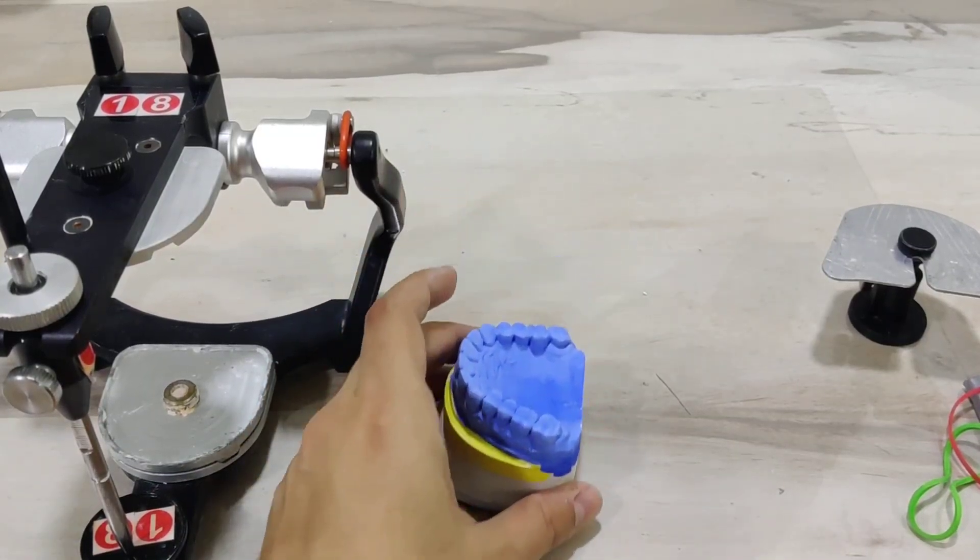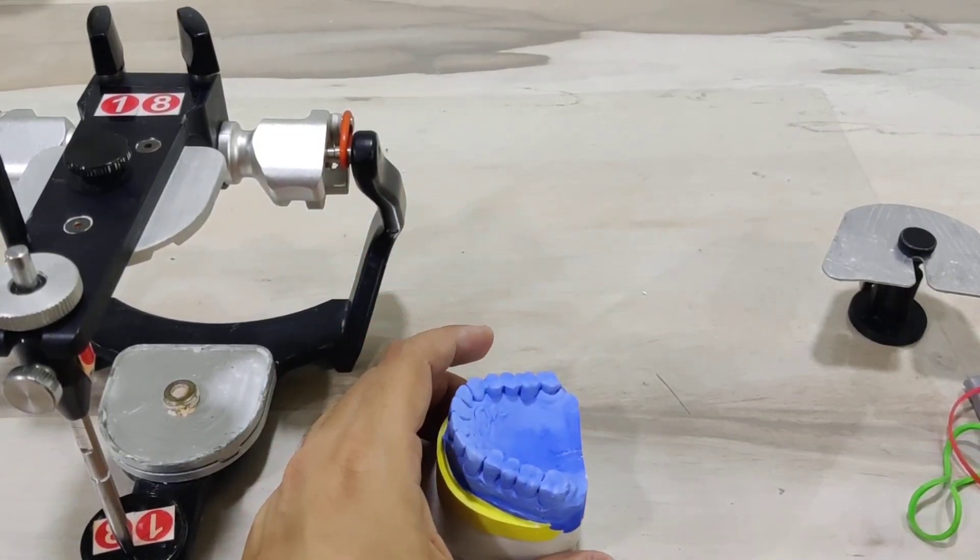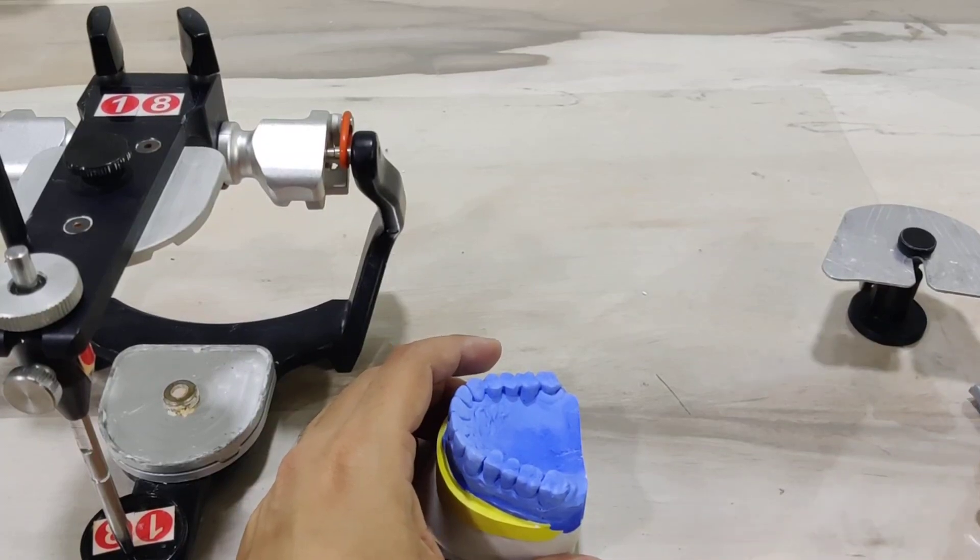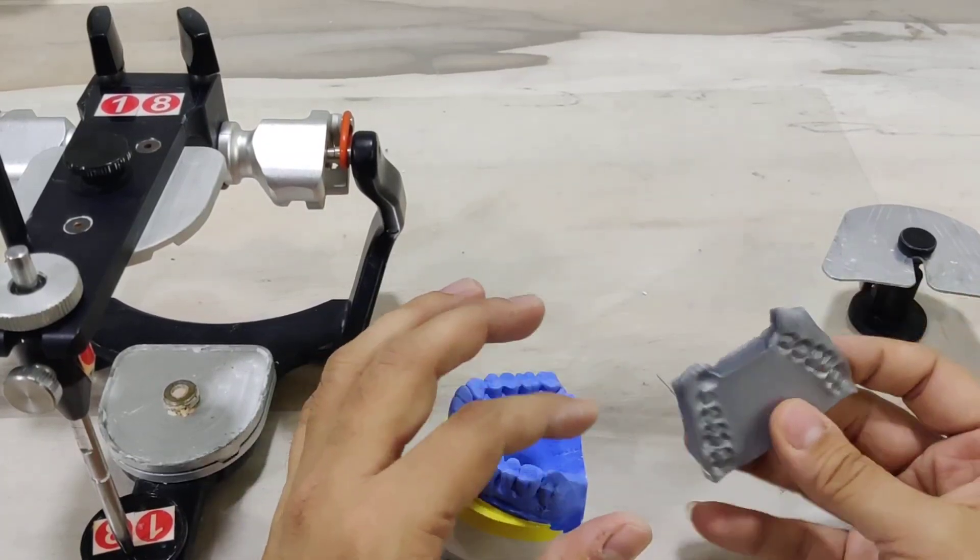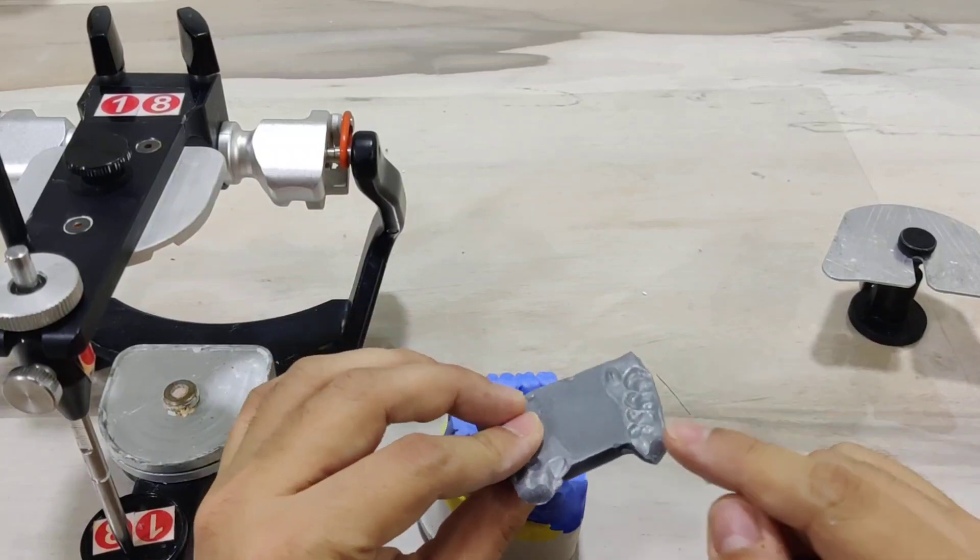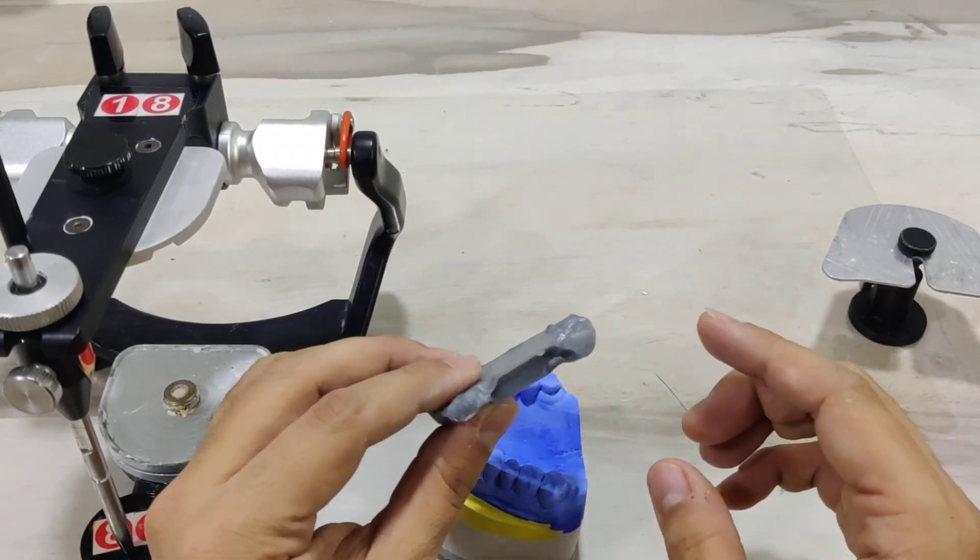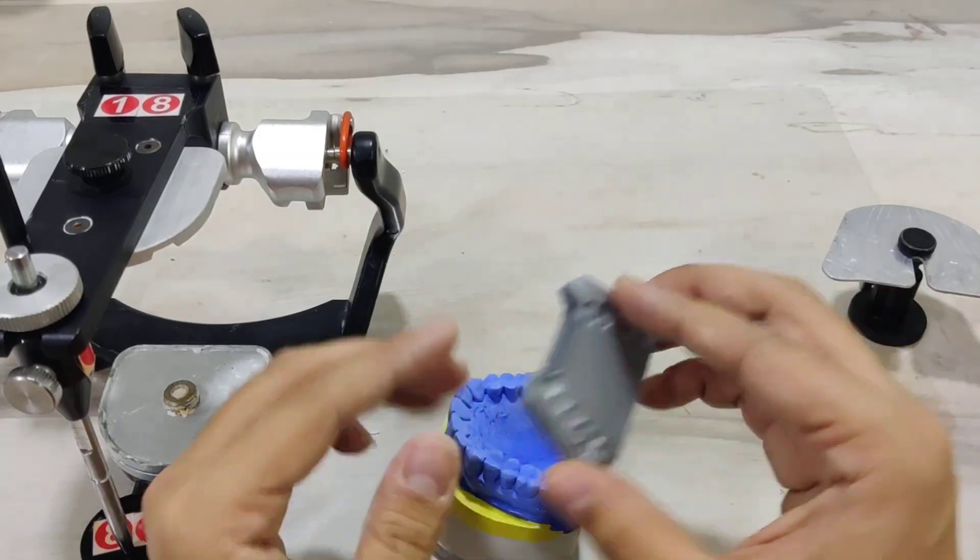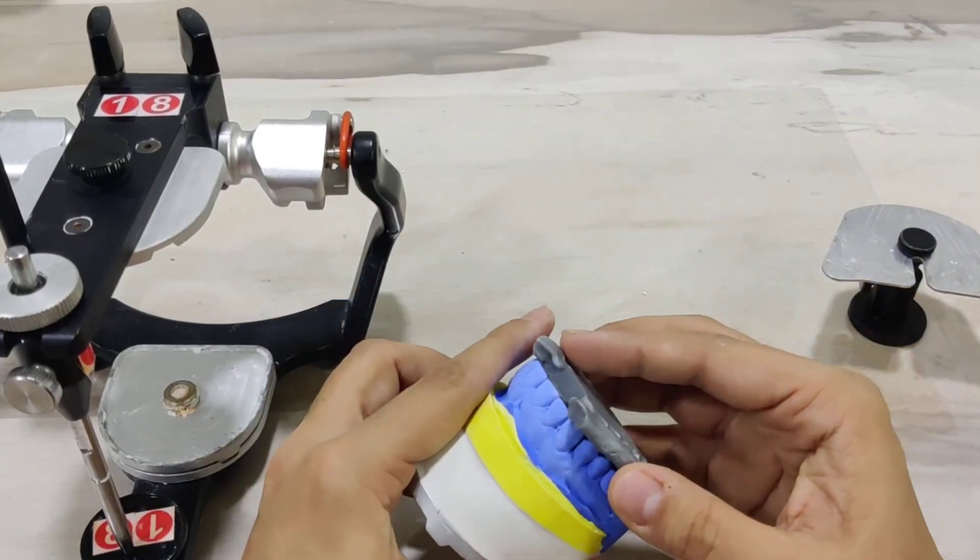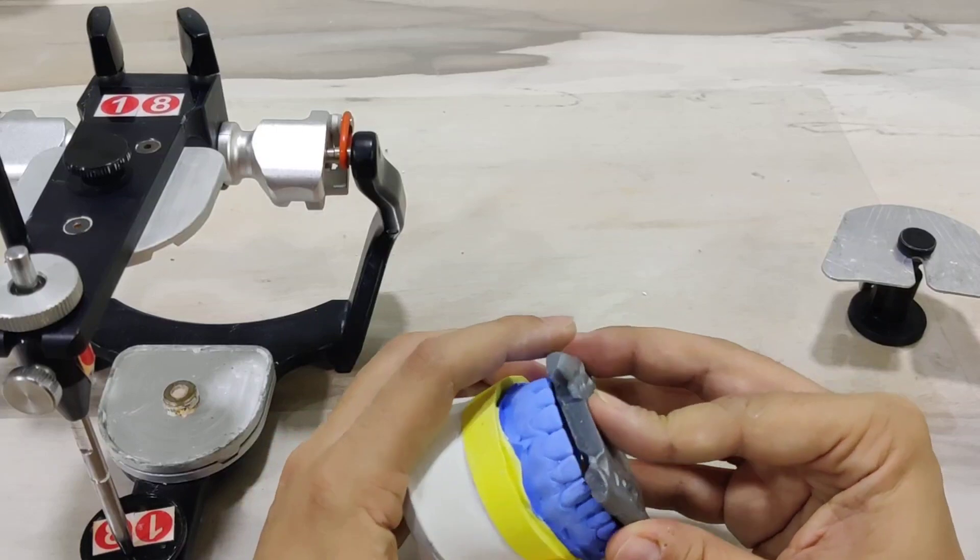Now that the articulator is ready, let us orient the maxillary and the mandibular casts with respect to each other. We do this with the help of this centric relation record. I prefer to break away these small canine extensions before the mounting as they sometimes tend to interfere. I adapt this onto the upper frame.